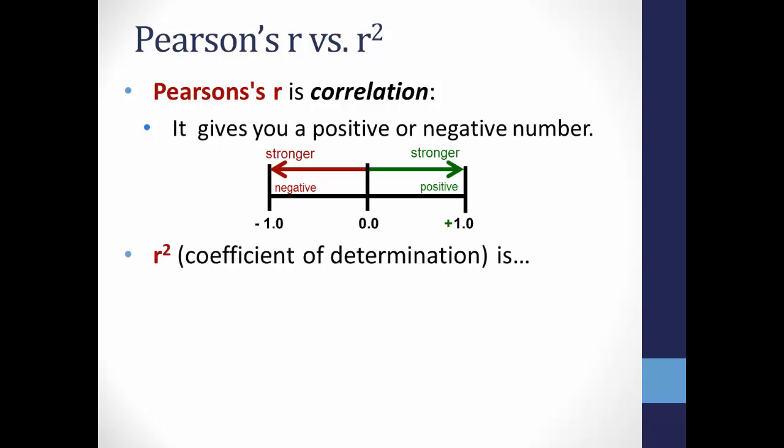R-squared, then, is, very simply, taking the Pearson's R statistic and squaring it. It will always, then, be a positive number, ranging from 0 to 1.0.